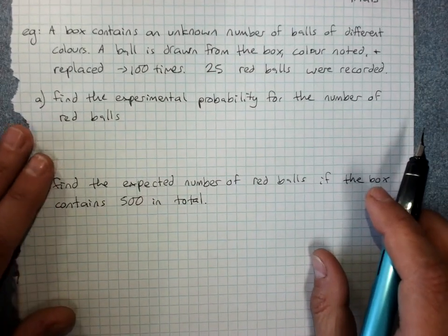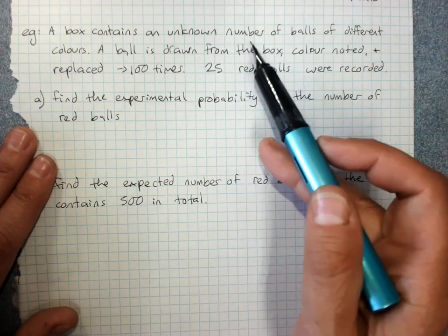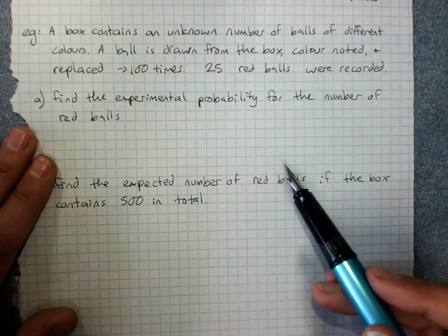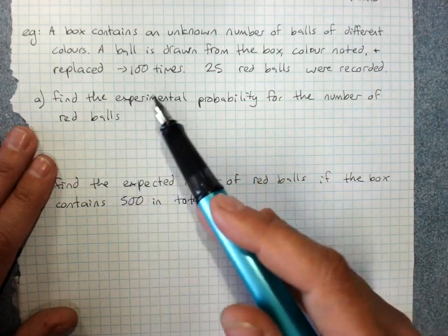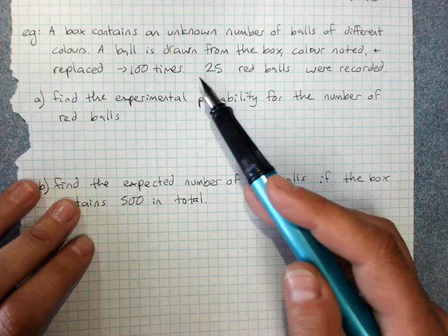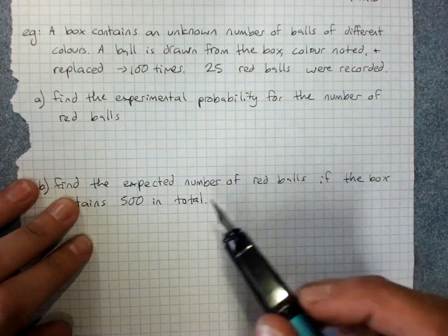So a box contains an unknown number of balls with different colors. Because we don't know how many balls there are or what colors, we can't find theoretical probability. We can do a repeated experiment: 100 trials of taking a ball out of the box, noting down the color, and putting it back. 25 red balls were recorded in this way.